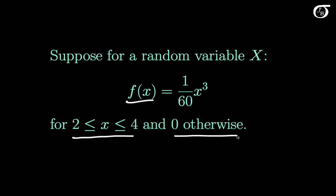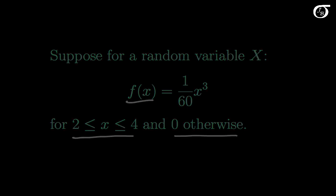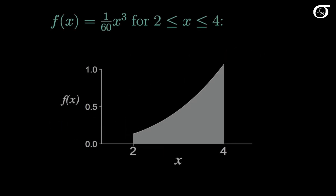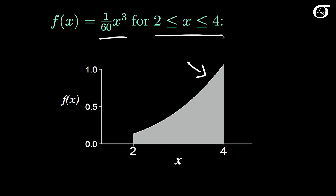Let's take a look at what that looks like. Here's the PDF plotted out. This curve is 1 over 60 times x cubed between 2 and 4, and then it drops to 0 outside of that range of values.